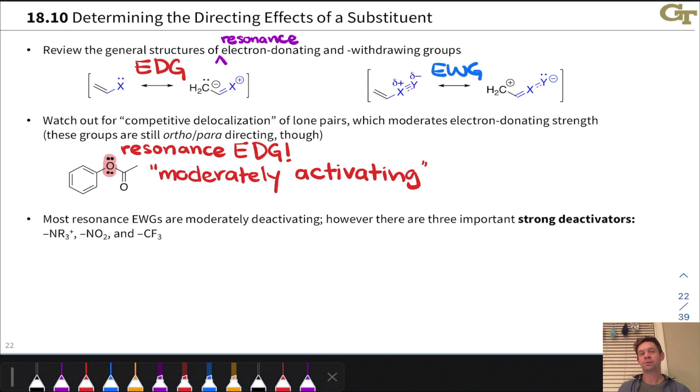Most resonance electron-withdrawing groups are what we'll call moderately deactivating when the ring carbonyls come to mind. However, there are three important strong deactivators. These are the ammonium group, which is withdrawing by induction, the nitro group, and the trifluoromethyl group, which is also withdrawing by induction.